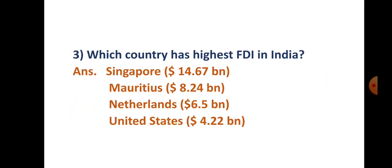Among countries with the highest FDI in India, Singapore is at the top position with around $14.67 billion invested. Mauritius invested around $8.24 billion, Netherlands invested around $6.5 billion, and the United States invested around $4.22 billion in Indian companies.